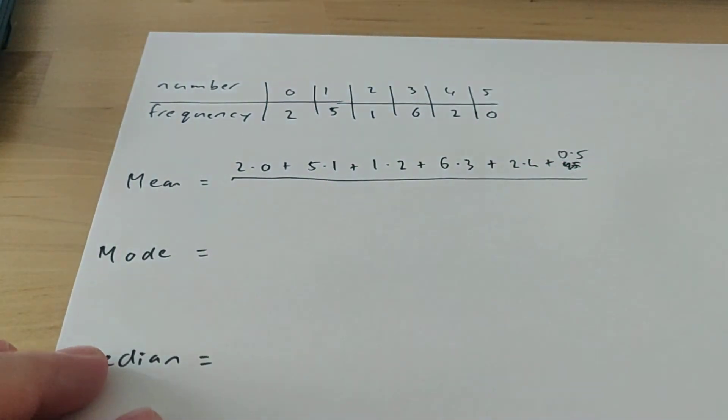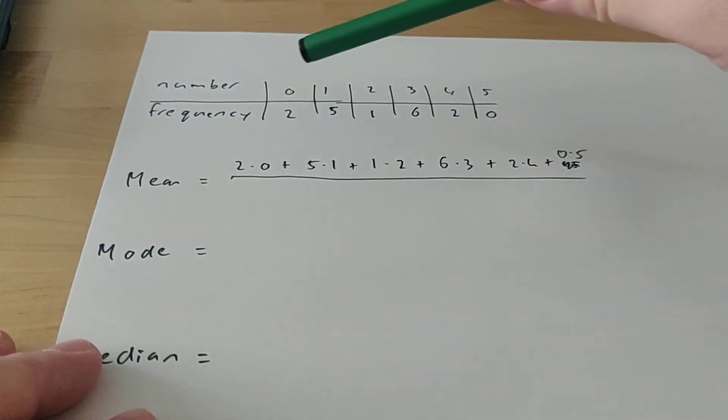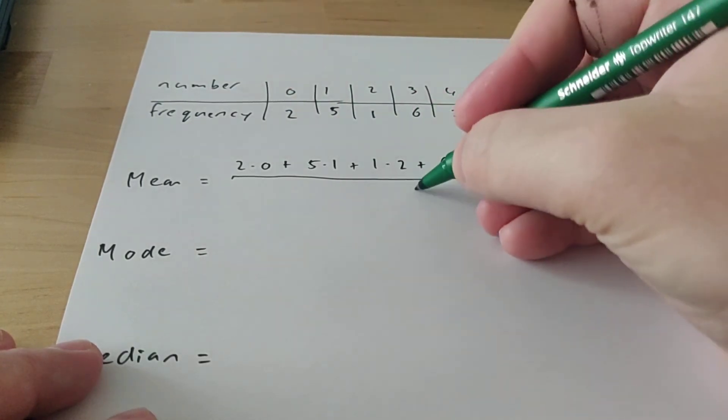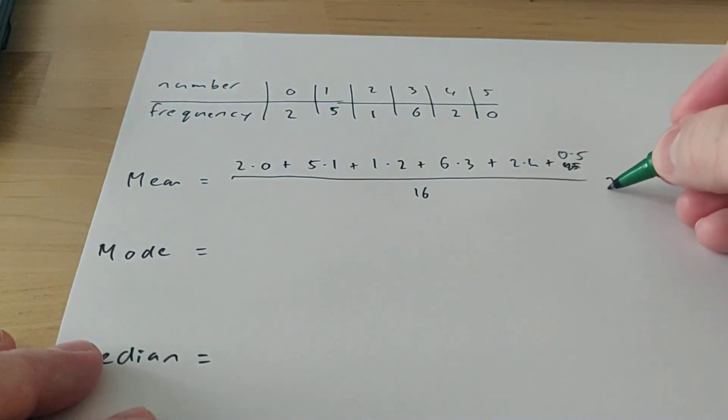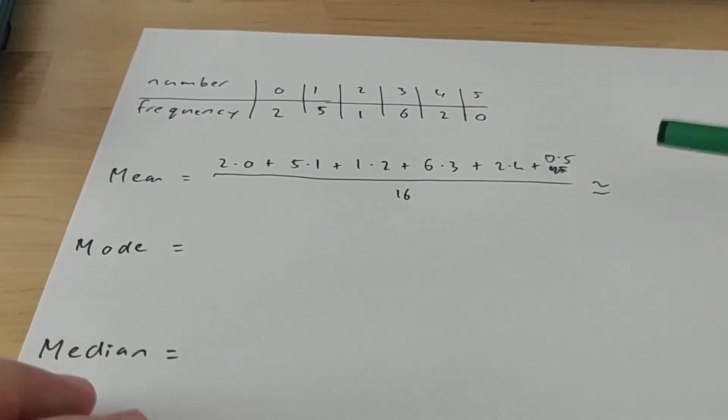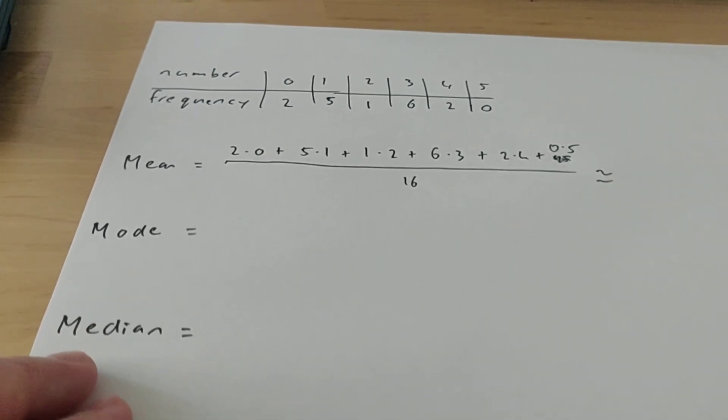You need to divide this by the total frequency. So the total frequency is when you add these numbers. So 2 plus 5 is 7, so this is 8, 14, 16. So you divide this by 16, and then you know the average, which will be one of these numbers, like rounded off. Actually, I'm not going to calculate it now, because it's not that interesting.